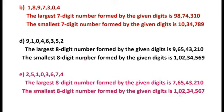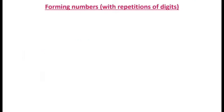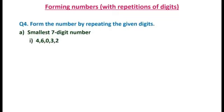You can see the numbers found here and note them down in your copy. Now the second condition: when we have to form numbers with repetition of digits. Question number four asks us to form the smallest seven-digit number by repeating the given digits 4, 6, 0, 3, 2. Here only five digits are given and we need a seven-digit number.